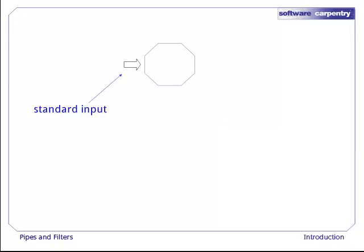Every process has at least one input channel called standard input. By this point, you may be surprised that the name is so memorable, but don't worry. Most Unix programmers call it stdin just to be safe.